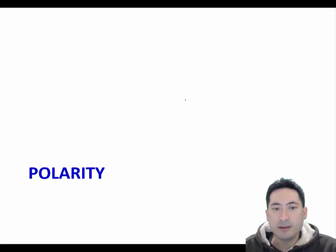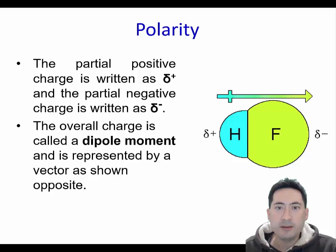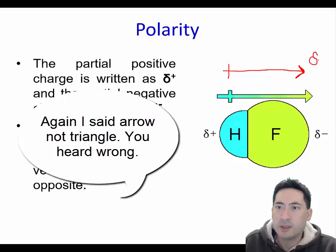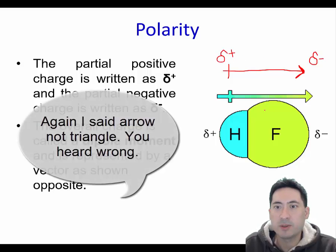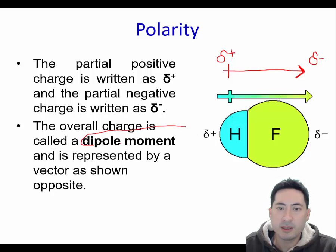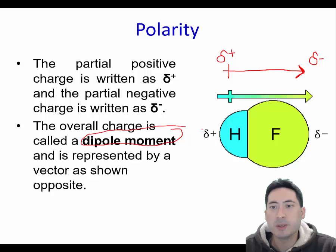Now we can move on to polarity. You can see here how we write it — you need to learn this. This is a special arrow with a little cross at the end that denotes where the negative area is. You also need to write a small delta, the small Greek letter delta negative and delta positive. That shows us where the dipole moment — that's the key word — the dipole moment is. And that's a permanent pole.